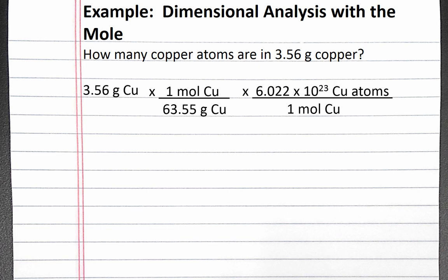And we're left with copper atoms. If you complete this calculation, you should get 3.37 times 10 to the 22nd copper atoms.